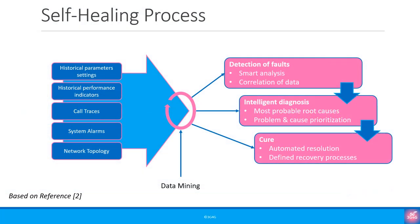When there are issues with an eNodeB or a cell, the SON server or OAM is aware that there is an issue. This is because it has access to a lot of historic information that allows it to see how everything should be performing as compared to how it's performing currently. A simplified way to represent self-healing would be as shown here.